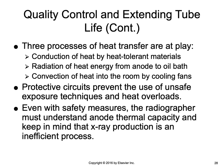There are three processes of heat transfer at play: the conduction of heat by heat-tolerant materials, the radiation of heat energy from the anode to the oil bath, and the convection of heat into the room by the cooling fans. Modern x-ray machines have protective circuits built in that prevent the use of unsafe exposure techniques and prevent heat overloads of the x-ray tube. However, even with all these safety measures, the radiographer must understand anode thermal capacity and keep in mind that x-ray production is a very inefficient process — almost 99% of the energy is converted to heat, and only 1% is converted to x-ray.